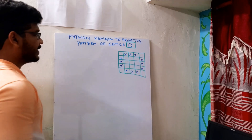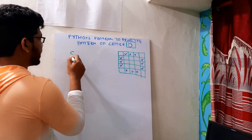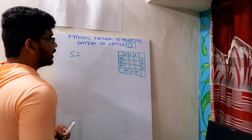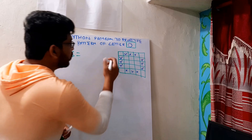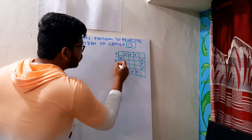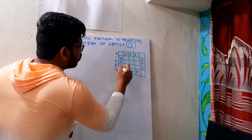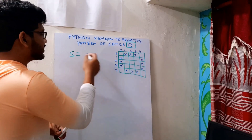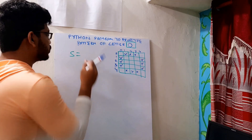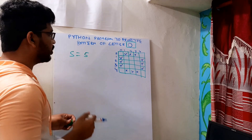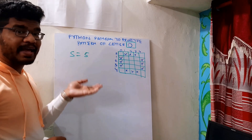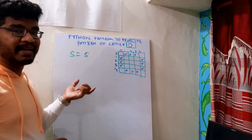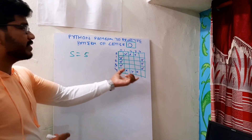Let us consider the size. Let me count it — 0, 1, 2, 3, 4 — that is, the size is 5. That is a 5 by 5 square. For explanation purposes, I am taking the size statically as 5.